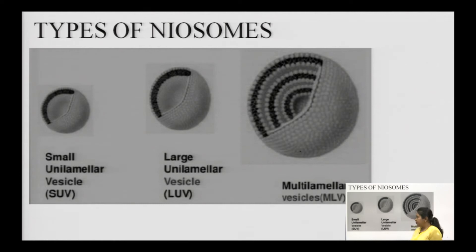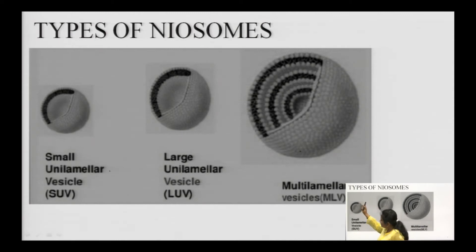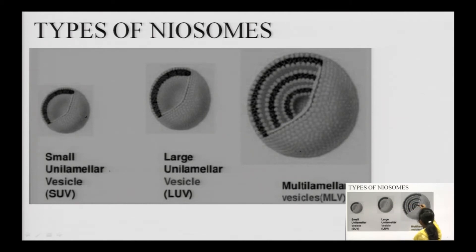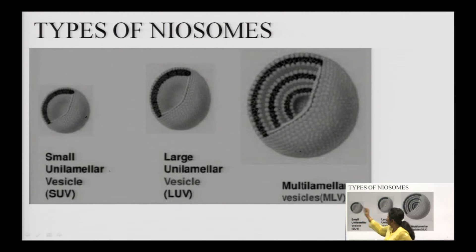Types of Neosomes: there are three types based on size. First is small unilamellar vesicle - the particle size is small. Next is large unilamellar vesicle - the size is larger. Then multilamellar vesicle - even larger and has more lamellar layers. In unilamellar, there is only one layer, whereas in multilamellar you can see three layers, that is why it is known as multilamellar.